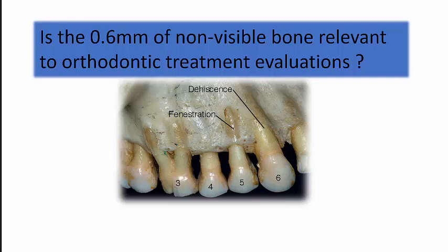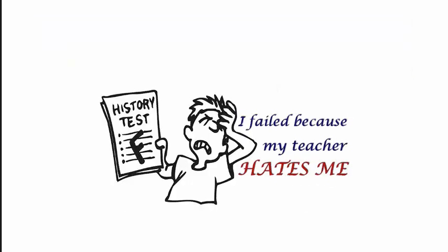What does that mean to us in terms of clinical practice? I hear this 0.6 millimeters thrown around all over the place, and I believe for the most part it's used as a rationalization for violation of the alveolar housing. You take a cone beam post-active orthodontic treatment, and you see the roots have been pushed halfway out of the alveolar housing, and the rationalization goes: well, 0.6 millimeters of bone is still there because studies show that cone beam CT causes that proportion of bone to be invisible.